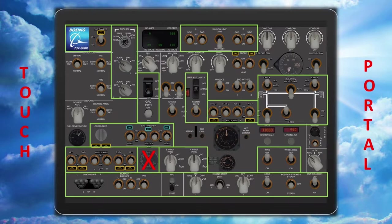Moving to the right, we have the four toggle switches for the window heat, although I haven't done anything with the window overheat test switch as I've personally never needed to use it. Each of the four window heat switches has a green annunciator light indicating when they are switched on. To the center-left of the panel we have the master battery switch plus its cover, and under that is the main ground power toggle switch. Over to the right we have the emergency light switch plus its cover, and below that the fasten seat belt sign switch.